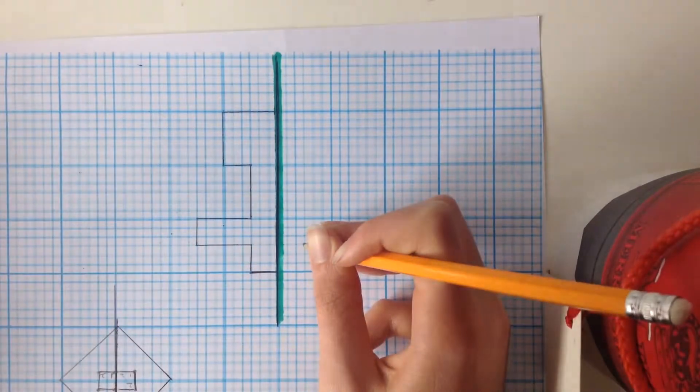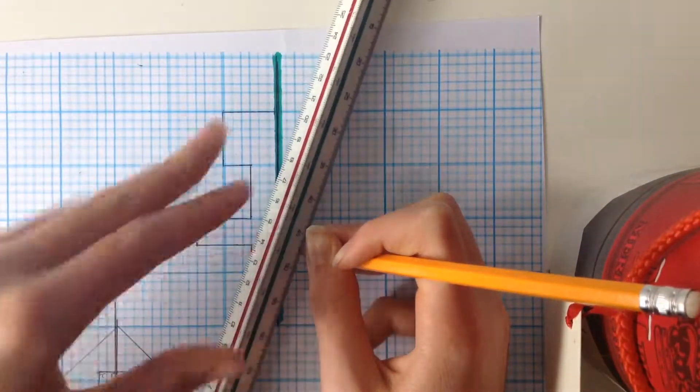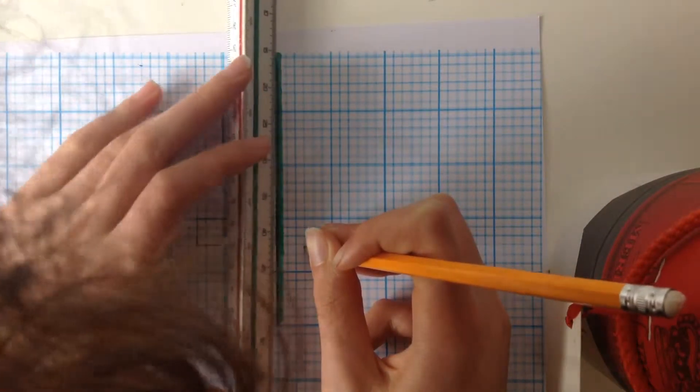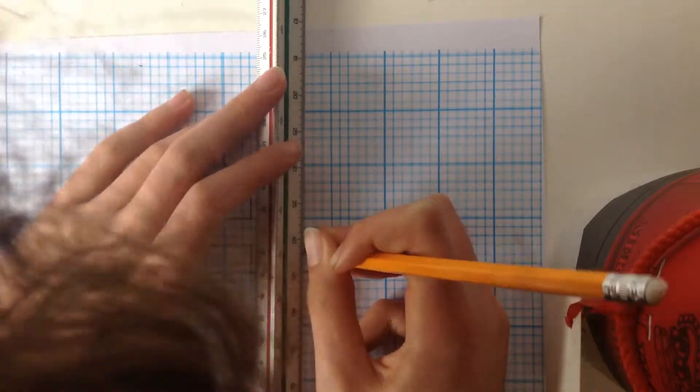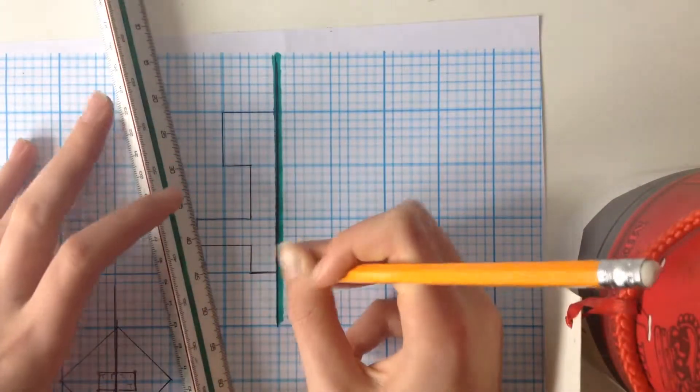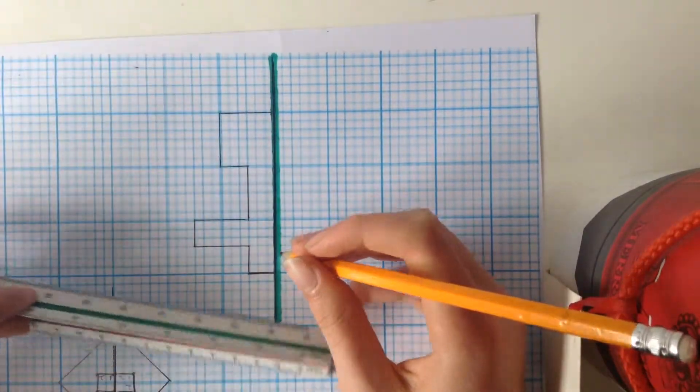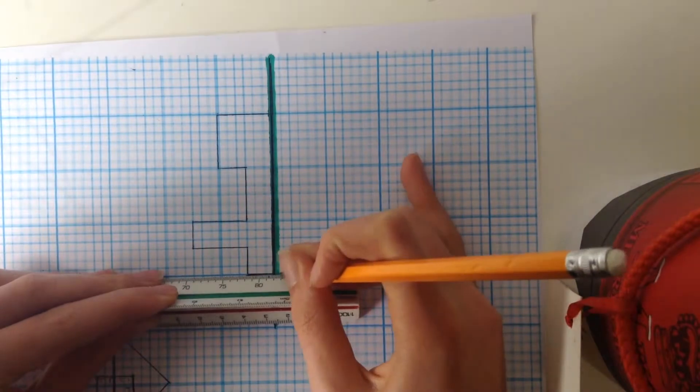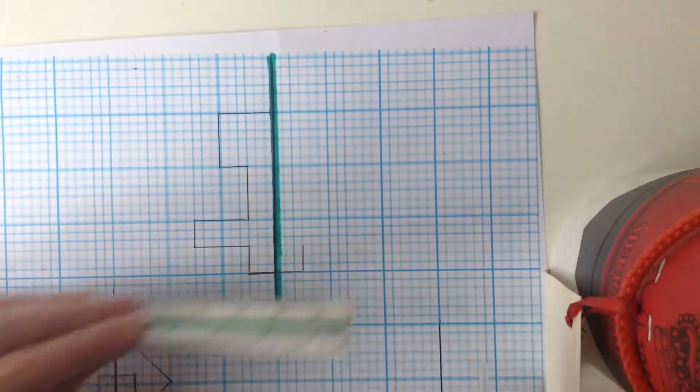So, about here, so three squares out is where you would put your line. And then you can see it goes in for three squares. So, I'm going to draw that.